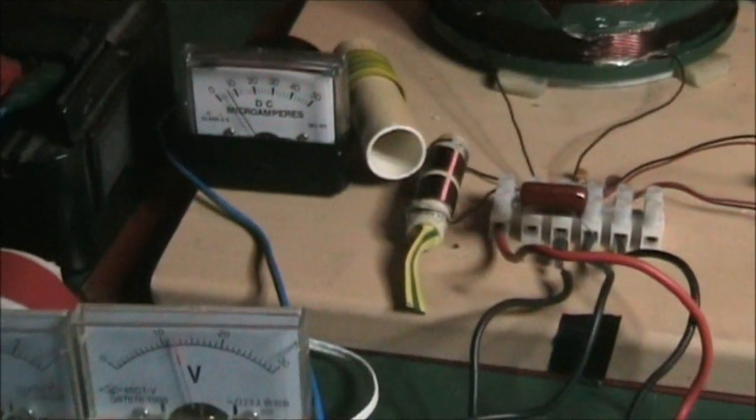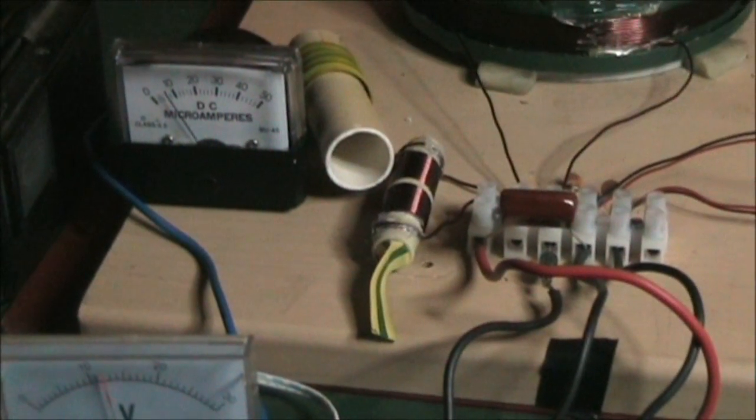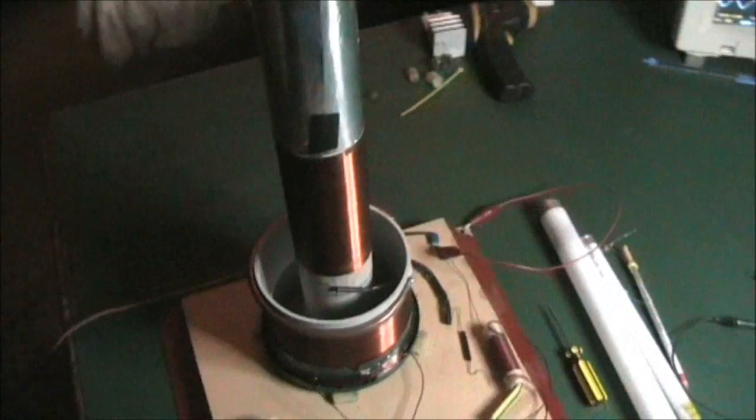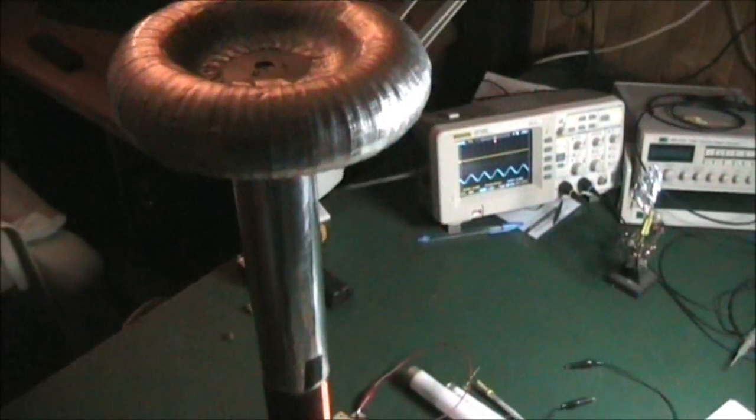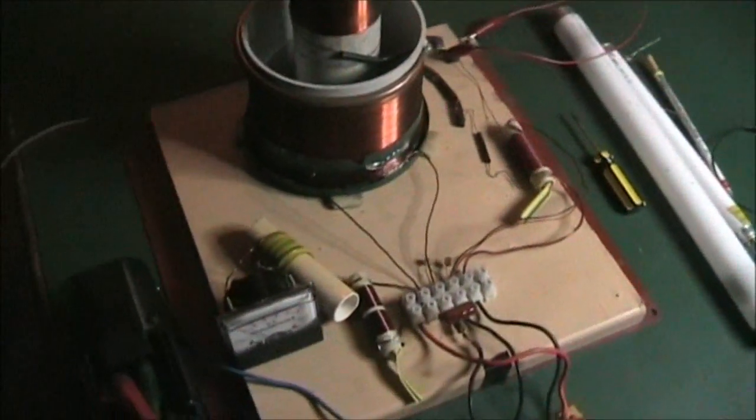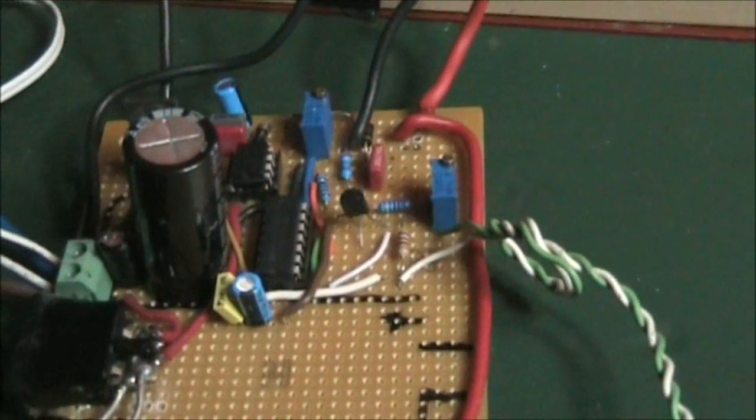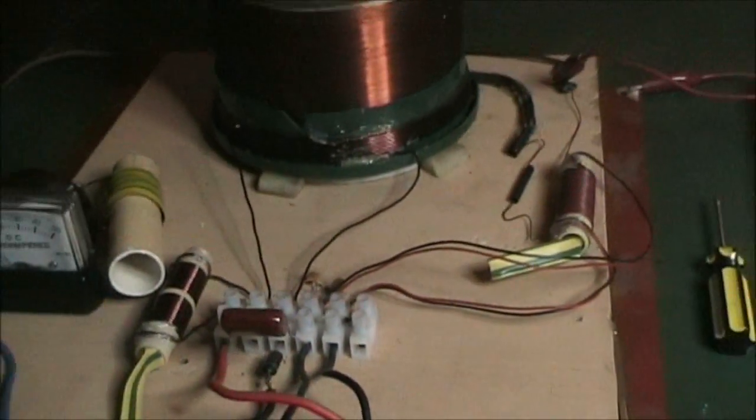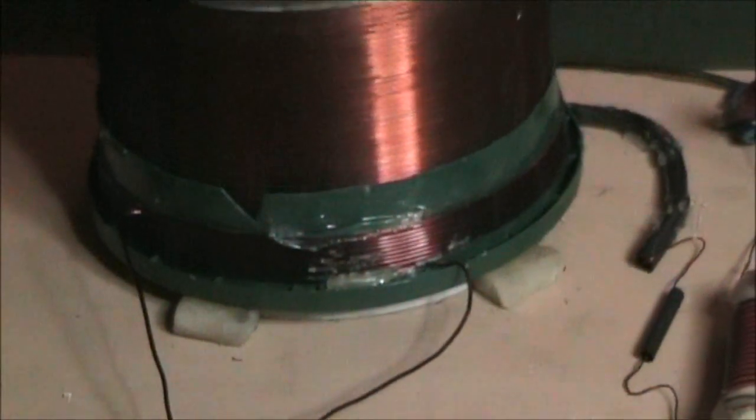Hey guys, just want to show you the setup I've got going on here. I've got this Tesla transformer set up with a feedback oscillator. Just switch to primary. Primary on this is 10 turns.